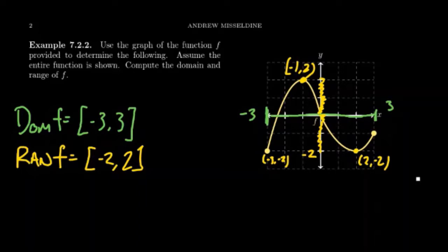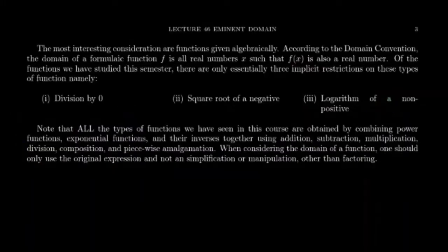Our ultimate goal is going to be moving on to the algebraic representation of a function. The most interesting consideration, of course, are these algebraic representations — we want to come up with a formula to represent the picture. According to the domain convention, the domain of a formulaic function f is going to be all real numbers x such that f(x) is also a real number. So we need a real number coming in and a real number coming out. There are some stipulations why we might have to restrict this. Sometimes we specify the domain implicitly or explicitly — for instance, it might not make sense for x to be a negative number, so we restrict the domain to non-negatives. This is very common in a story prompt situation — that's our fourth representation of a function, some type of verbal description.